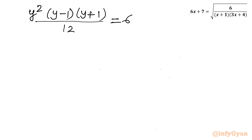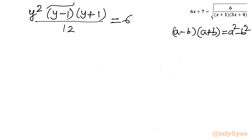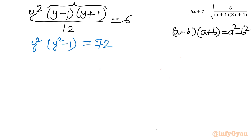Cross multiplying and using the identity (a minus b)(a plus b) equals a² minus b², I can write y² times (y² minus 1) equals 72. Expanding gives y⁴ minus y² minus 72 equals 0, which is a quadratic equation in y².